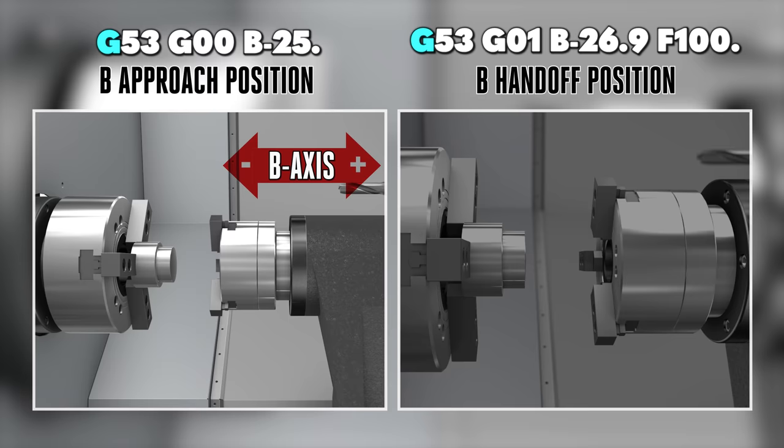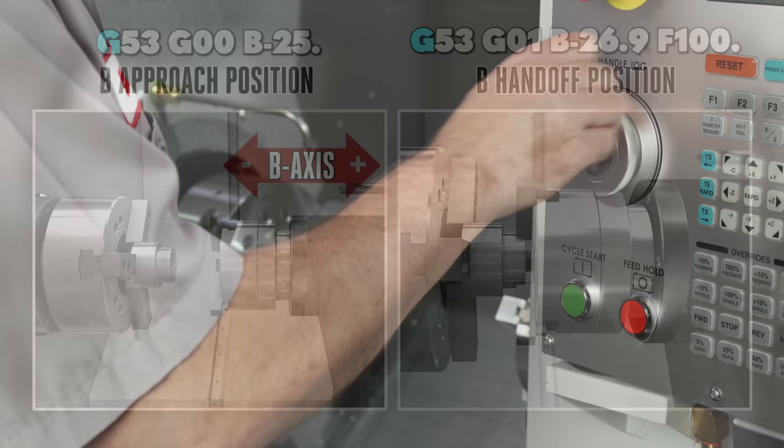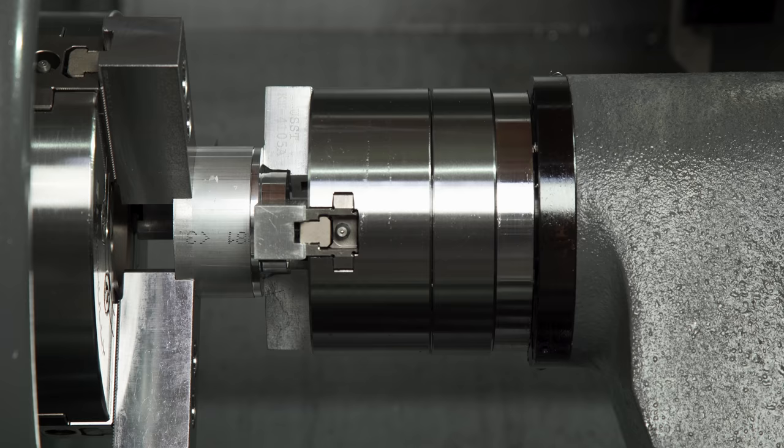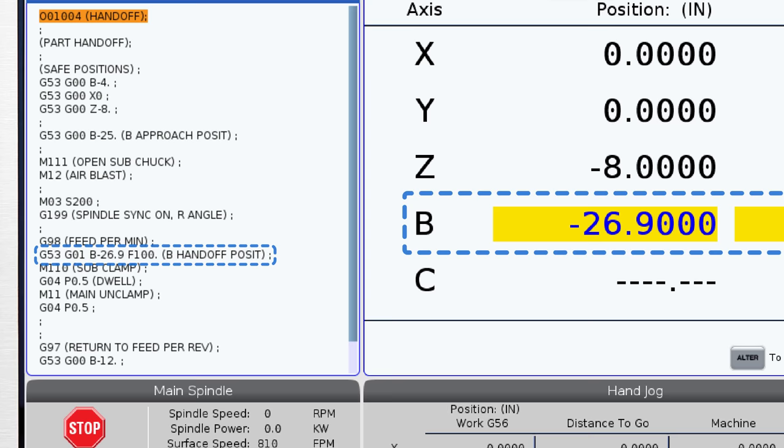Our sub-spindle is our B-axis. For our part hand-off, we're gonna jog that sub into position wherever we'd like it to be, and then we're gonna look at our machine position on our position screen. Our machine position is our G53 B-axis position that we're gonna be using in our program. Now we've made an entire video on G53 and lathes, so check it out.